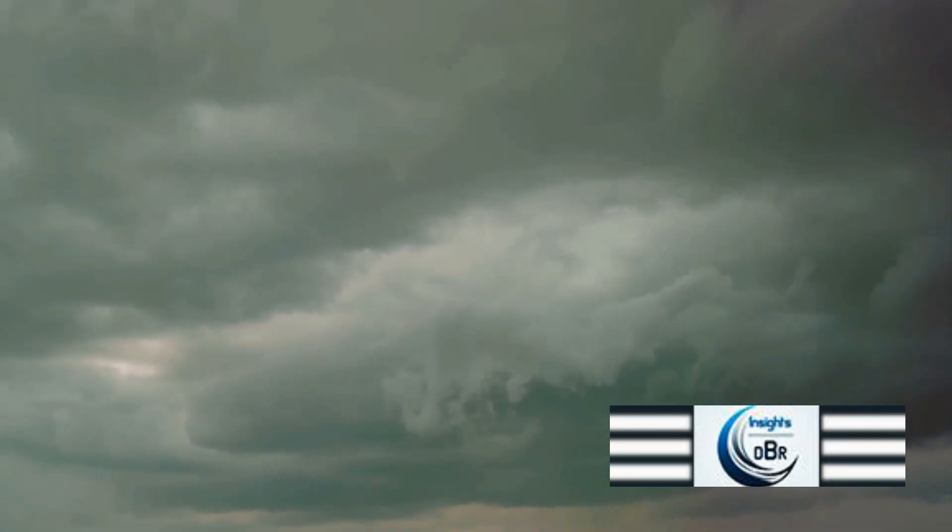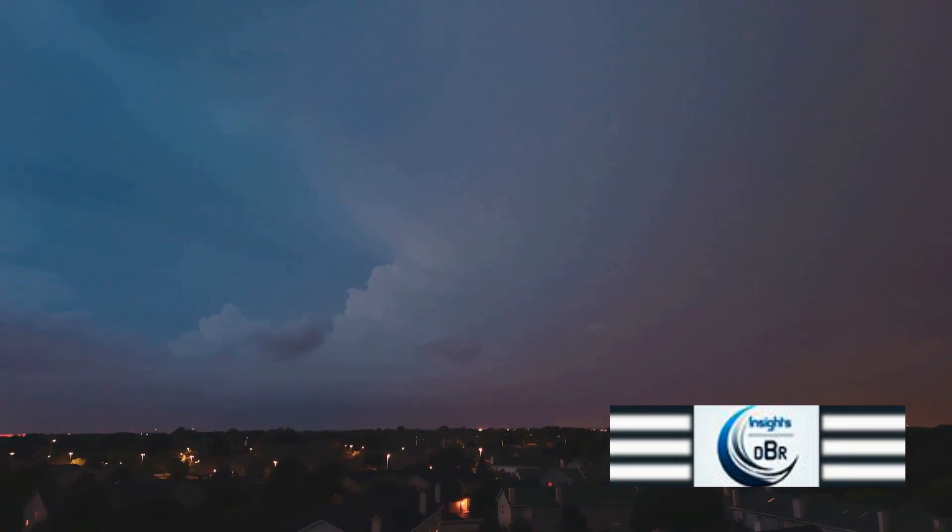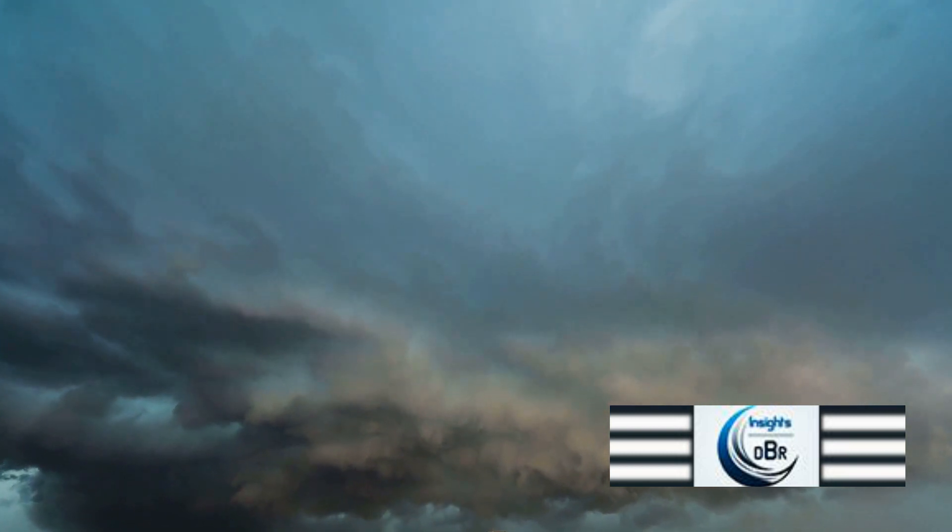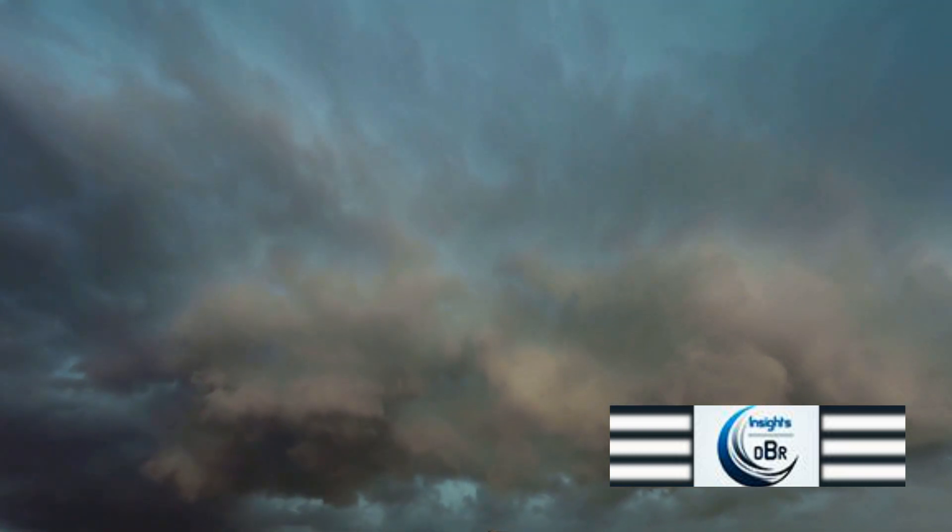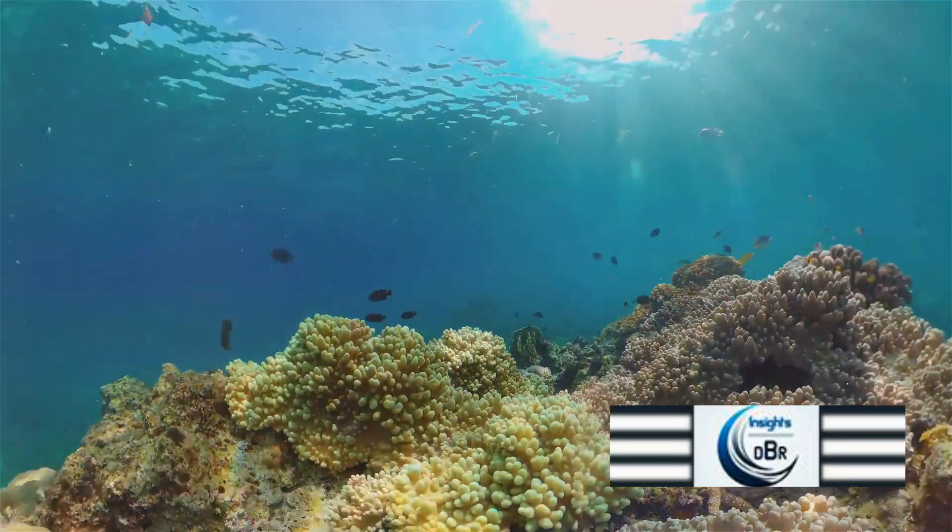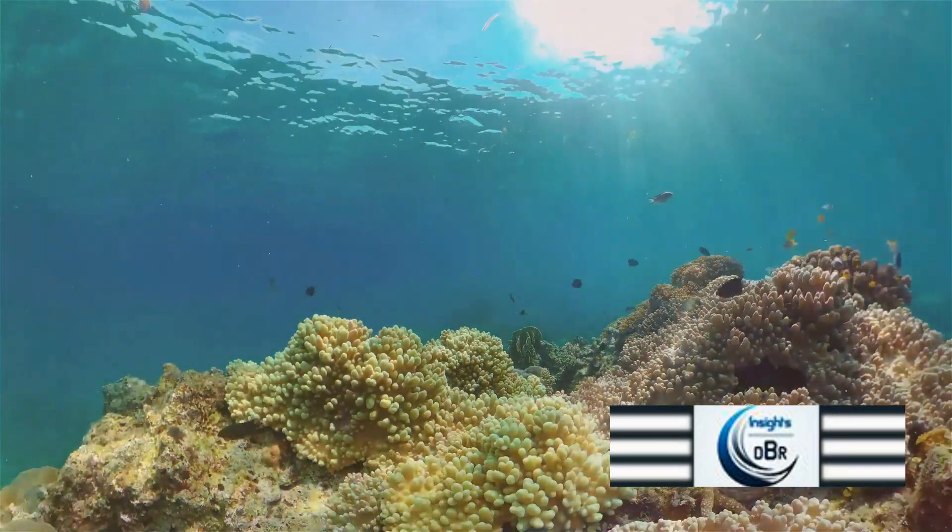The comet's impact would also trigger massive fires, releasing vast amounts of carbon dioxide into the atmosphere, further exacerbating the global cooling and leading to an even more prolonged nuclear winter. In the oceans, the disruption of photosynthesis would affect the marine food chain, threatening the survival of many aquatic species. The change in ocean temperatures could also cause the collapse of many marine ecosystems.